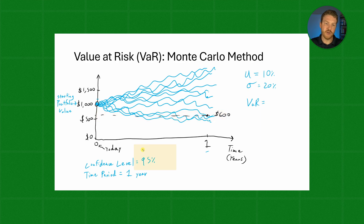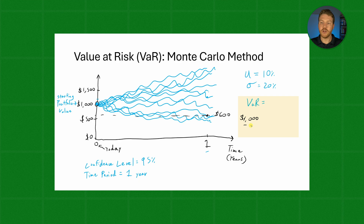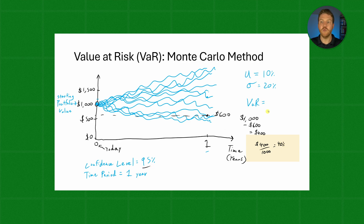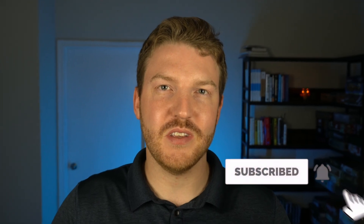Why is it the fifth percentile? Because it's 100% minus the confidence level of 95%, which gives us that fifth percentile worst outcome. Now we have $600 at the end. So what would our VAR be? Well, if we ended up with $600 and we started with $1,000, we actually lost a total of $400. That's a 40% loss at the 95th percentile worst outcome, meaning our VAR in this case would be negative 40%. If you'd like to learn how to calculate the value at risk using the Monte Carlo method in Excel or Python, click here or here.